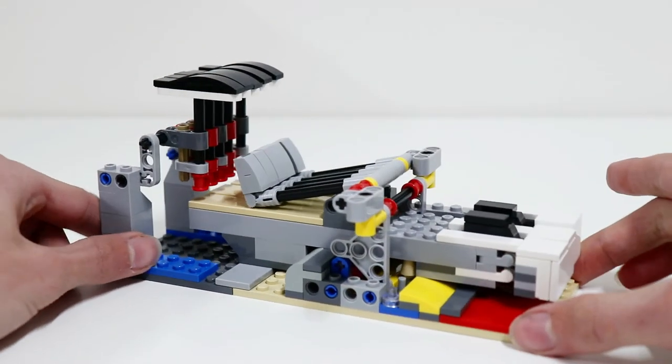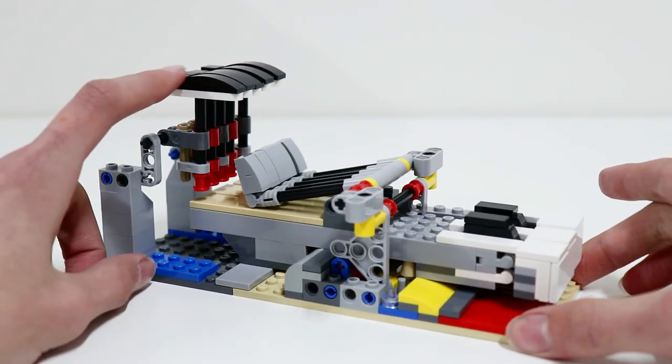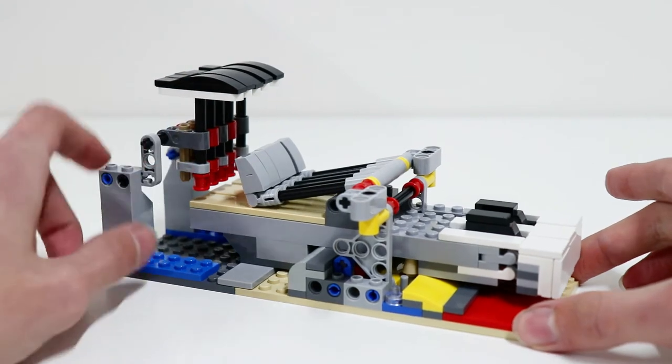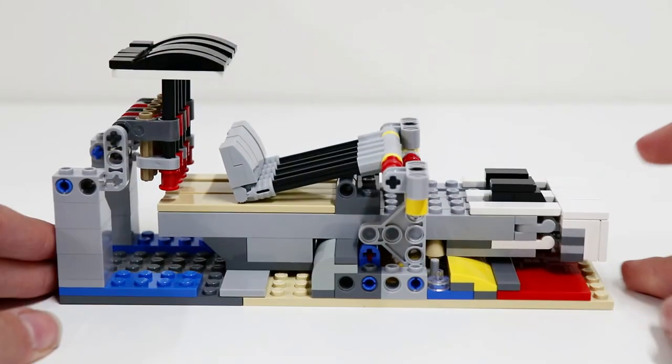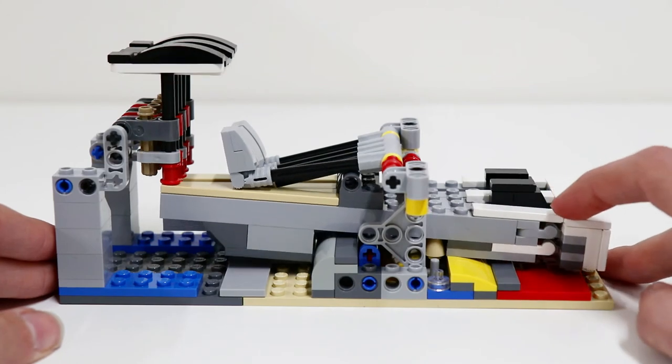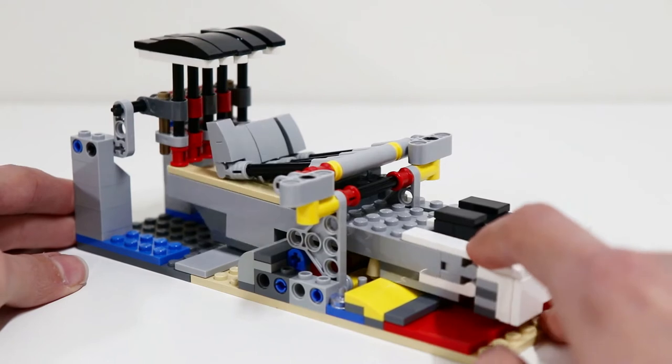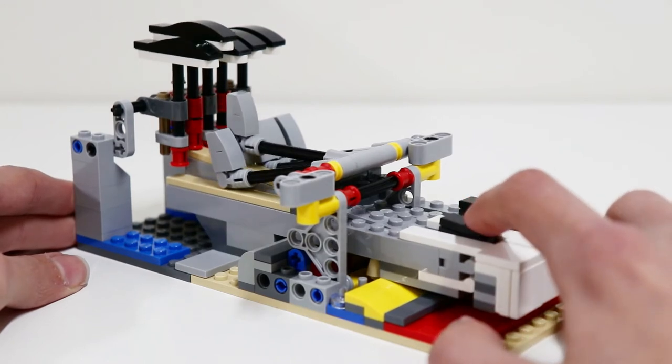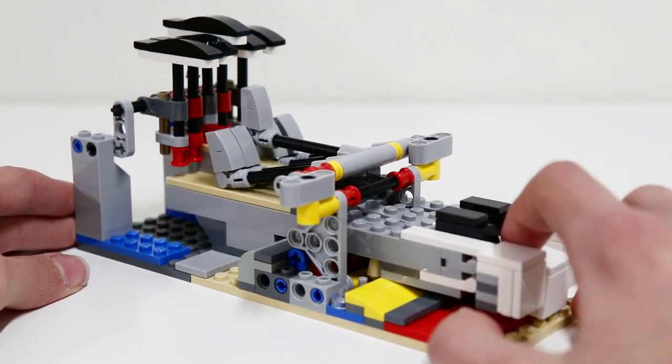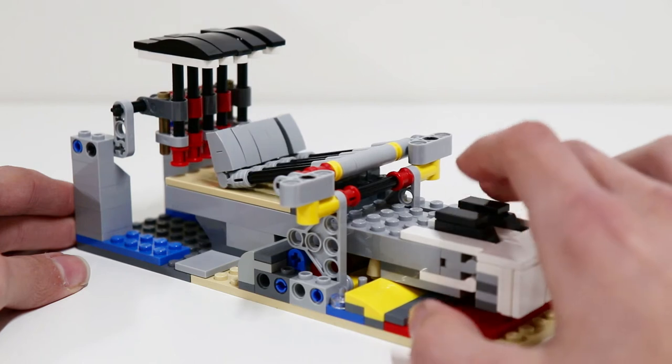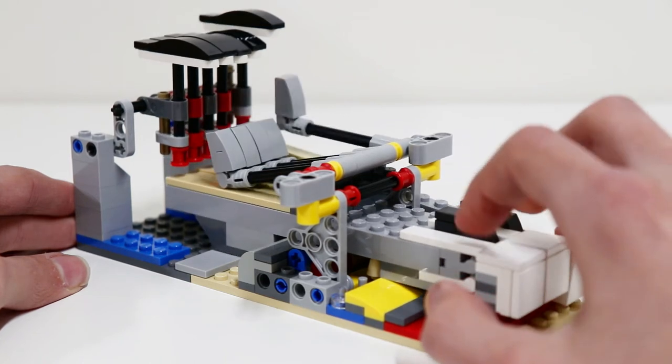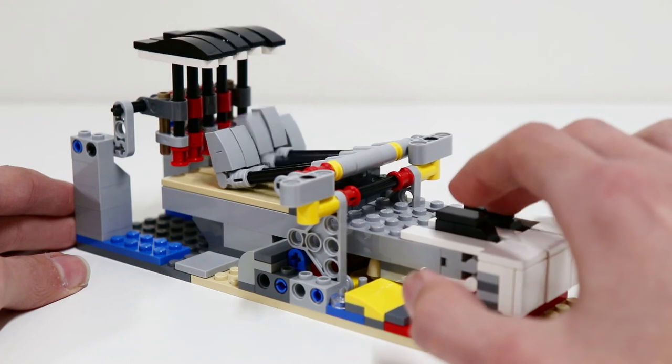When I press the key down, you can see what happens here. The hammer is just swinging on an axle so it can freely move and it's just pushed up. Then the end of the key hits the little red Technic piece and that lifts the dampener up. So you can see it all happens in one smooth motion and it looks absolutely awesome.